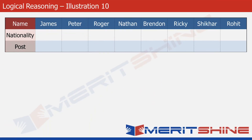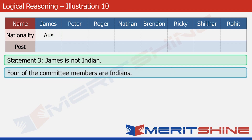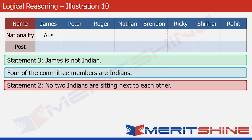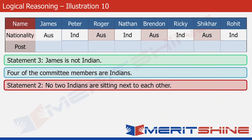Let's go to the statements and start filling up the table. Statement 3 is very simple — it tells us that James is not Indian, so we write Australian for James. Statement 2 says that no 2 Indians are sitting next to each other, so the 4 Indians must be seated in alternating positions, with the 4 Australians filling the remaining spots. This gives us a concrete arrangement showing the nationalities of all 8 individuals.